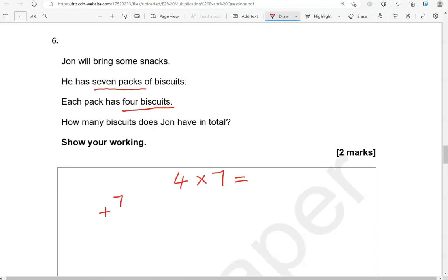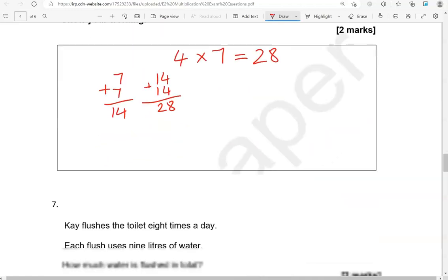7 and 7, that is 14. So we have 2 times 7. That equals 14. 14 and 14 is 28. So 4 times 7 equals 28.